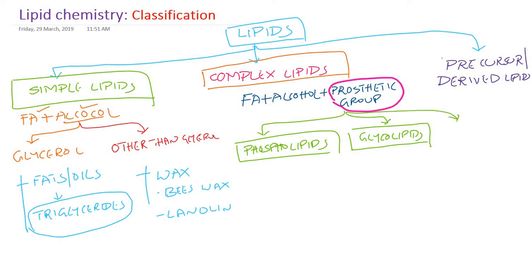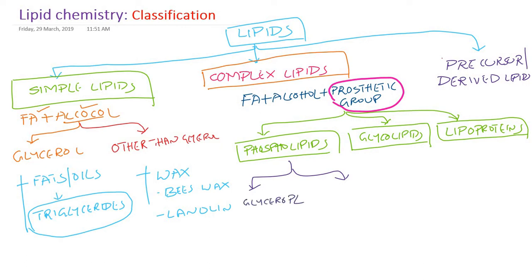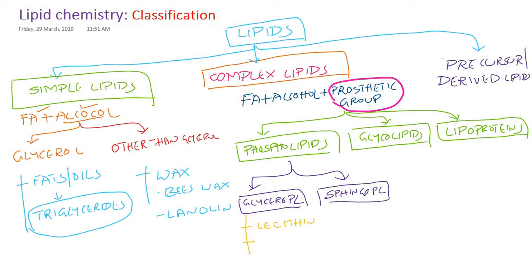Phospholipids, depending upon the alcohol, can be subclassified into two types. If the phospholipid alcohol is glycerol, we call them glycerophospholipids — examples are lecithin, which is present in our cell membrane, and cephalin, present in nervous tissue especially the brain. If the alcohol is sphingosine, we call them sphingophospholipids — example is sphingomyelins.